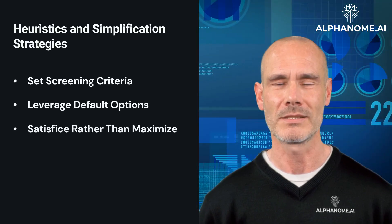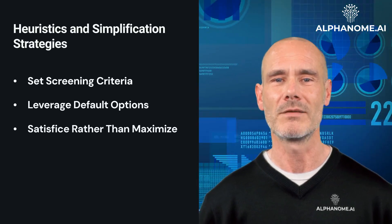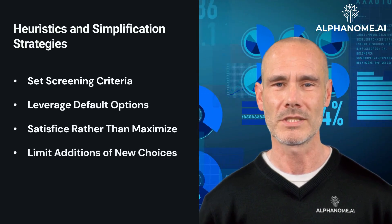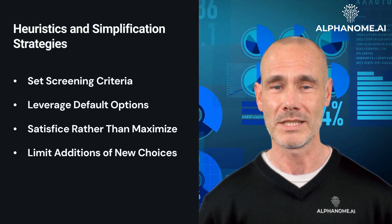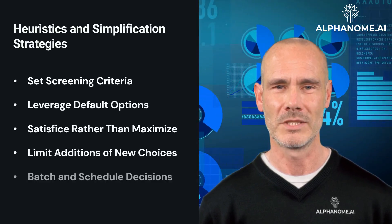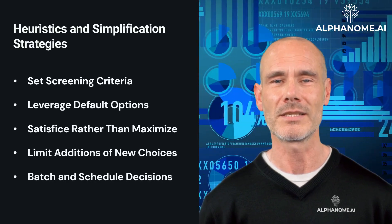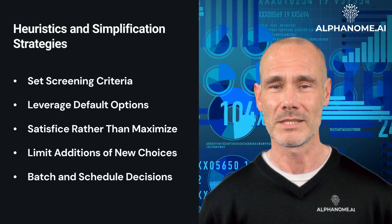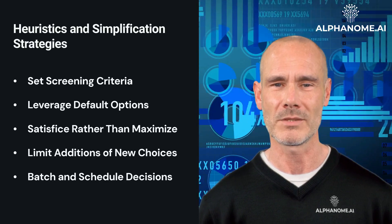Satisfice rather than maximize — satisficing means choosing an option that meets your minimum requirements rather than endlessly seeking the absolute best hypothetical option. Limit additions of new choices — adding to an already complex portfolio or array of accounts exacerbates over-choice issues, so limit expanding choices over time. Batch and Schedule Decisions — don't continually second-guess decisions; instead, conduct reviews and rebalancing during scheduled intervals. By simplifying their decision processes, creating filters and guardrails, and satisficing rather than maximizing, investors can overcome the downsides of choice overload bias.